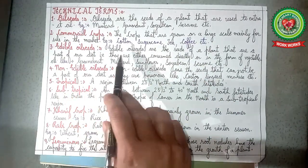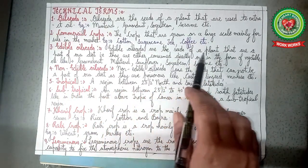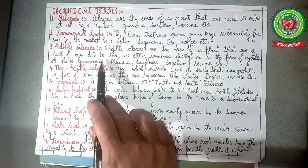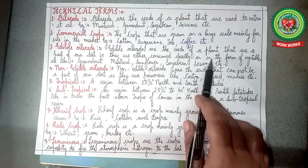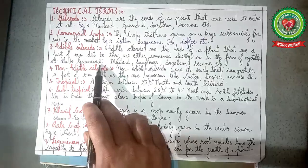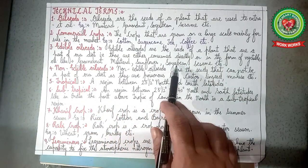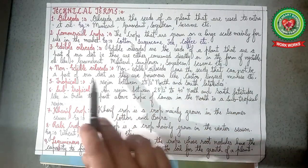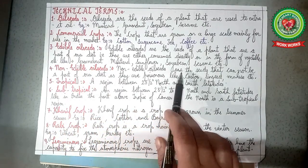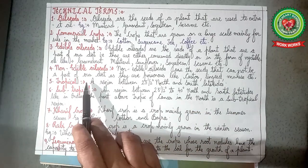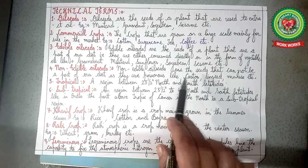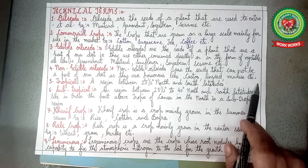Number 3, edible oilseeds: edible oilseeds are seeds of a plant that are part of our diet — they are either consumed directly or in the form of vegetable oil — like groundnut, mustard, sunflower, soyabean, sesame, etc. Number 4, non-edible oilseeds: seeds that cannot be part of our diet as they are poisonous — like castor, linseed, mahua, etc.